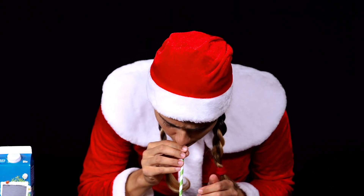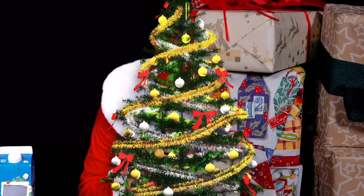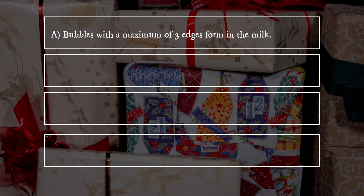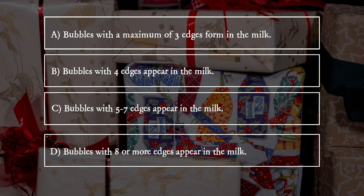What does she observe in the milk glass? A. Bubbles with a maximum of three edges form in the milk. B. Bubbles with four edges appear in the milk. C. Bubbles with five to seven edges appear in the milk. D. Bubbles with eight or more edges appear in the milk.